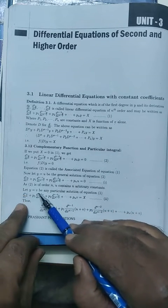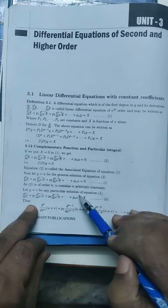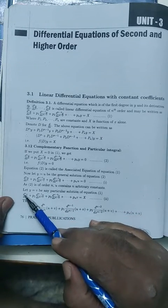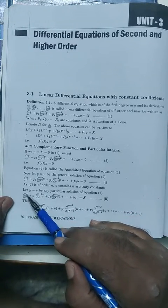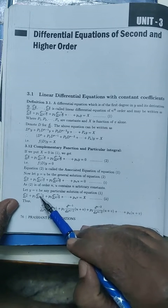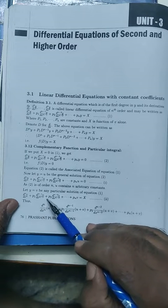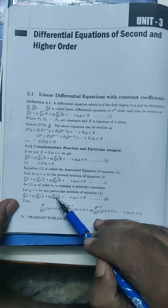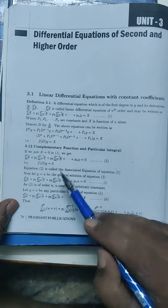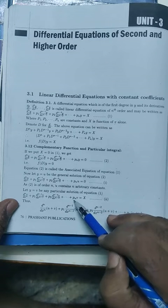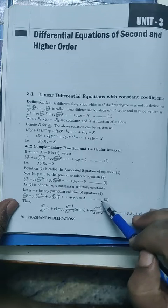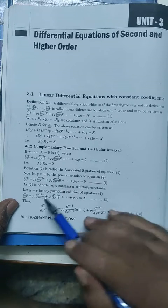Let y = v be a particular solution of equation 1. Therefore, dⁿv/dxⁿ + p₁ dⁿ⁻¹v/dxⁿ⁻¹ + p₂ dⁿ⁻²v/dxⁿ⁻² + ... + pₙv = X. Suppose this is equation 2.